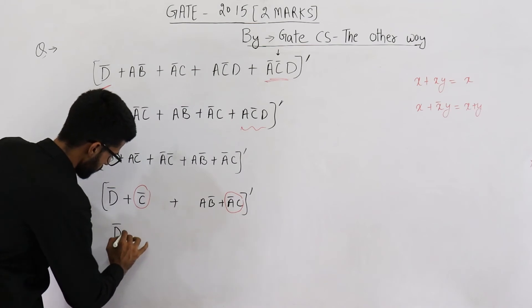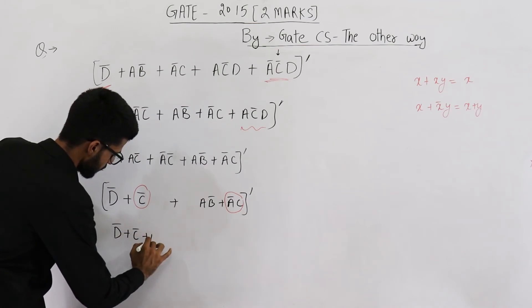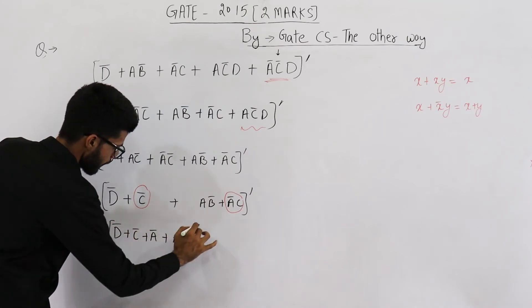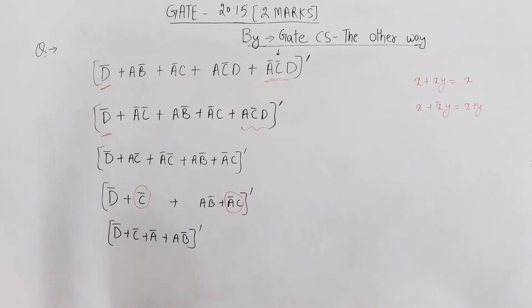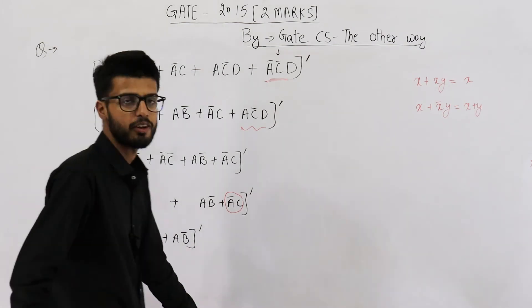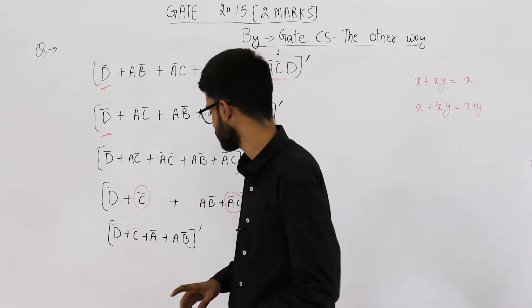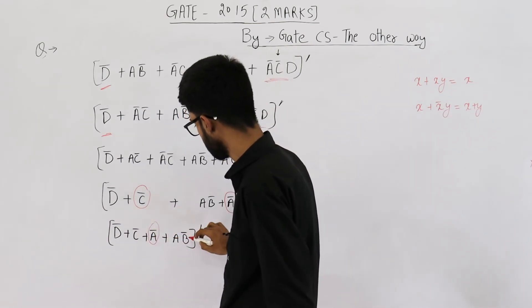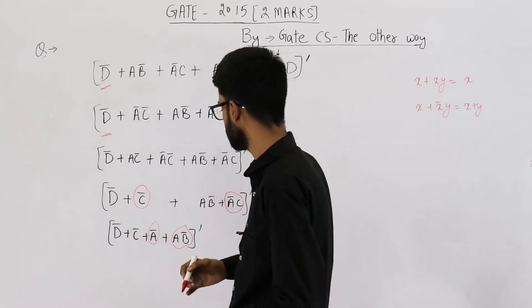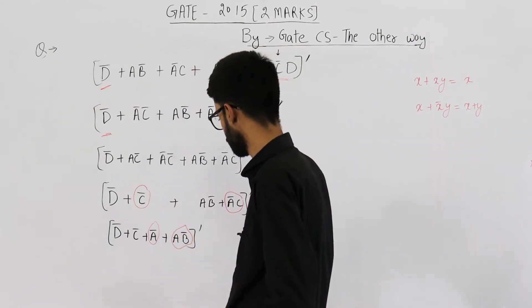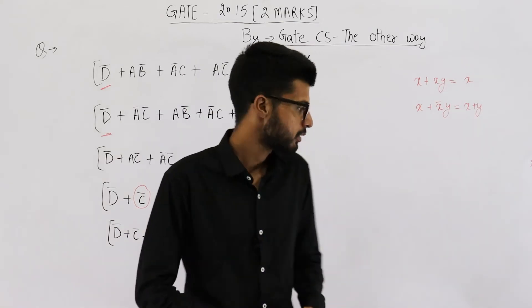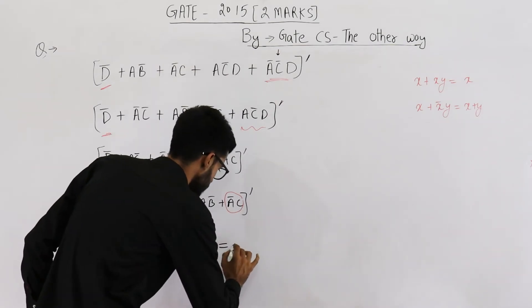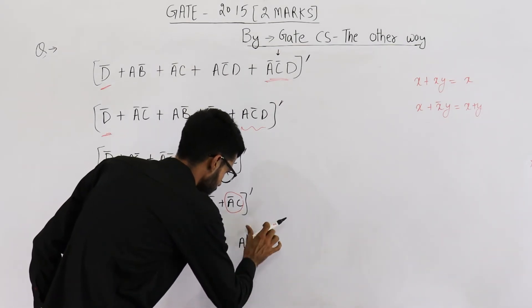You will get d complement plus c complement plus a complement plus ab̄. And the whole complement will be left as it is. Again, the absorption law is applicable — this whole question is based on absorption law. You have a complement and ab̄, so apply absorption law on these two — the second form. And you will get a complement plus...